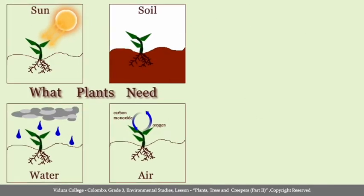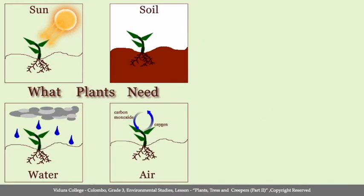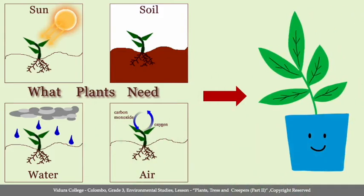So children, as we learned, plants need sunlight, soil, water, air, enough space, and fertilizer for their growth.